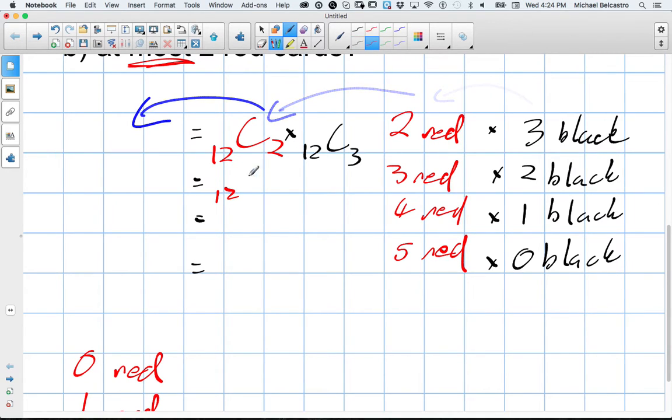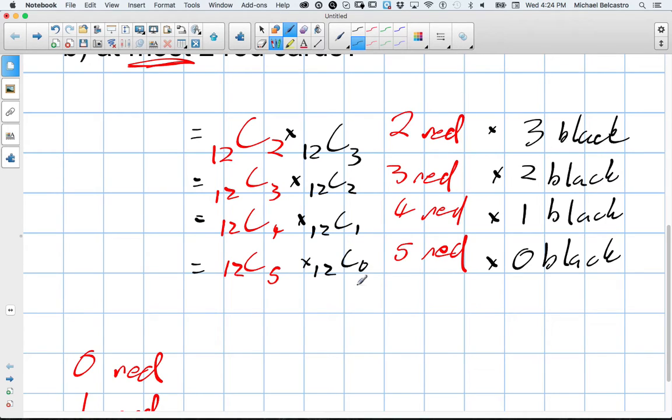Which then takes us to the exact same thing for the next two. We follow the exact same pattern. How many ways can we choose three red cards? How many ways can we choose four red cards? How many ways can we choose five red cards? And then with the black, we multiply it. How many ways can we choose two black? How many ways can we choose one black? And how many ways can we choose zero black cards?